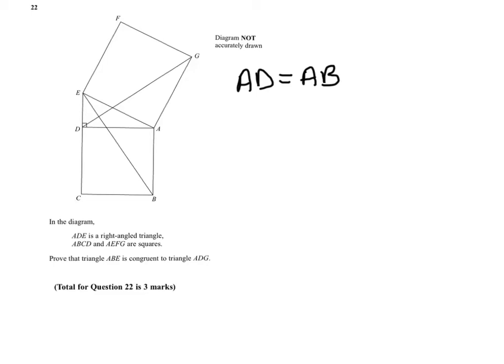We can also do the same for AG, because it's equal to AE, again, because they are sides of a square. So we now have two sides.